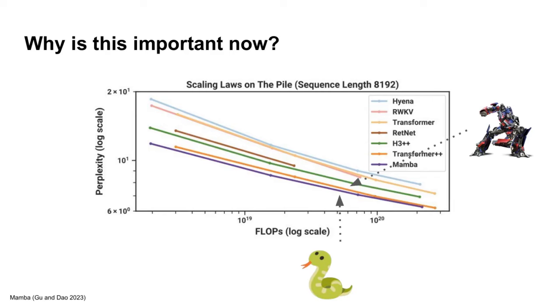The Mamba paper showed that as the model scaled in amount of compute, Mamba models kept pace with even the best transformers on pretty large language modeling tasks. These results outdid many of the previous attempts to build these linear scaling models and showed that it might really be possible to build very effective language modeling with this style of model.